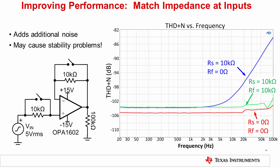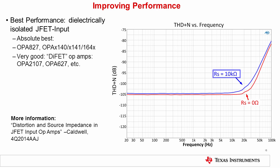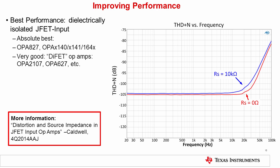However, the additional noise of the 10 kilohm resistor causes the green curve to be shifted by about 1 dB. To minimize noise, part count, or for stability reasons, we may not want to include the matching feedback resistor. Also, in many cases the source impedance isn't precisely known or may vary, making it impractical to match. In these cases, the best way to improve performance is to use a modern JFET input op amp from TI on a dielectrically isolated process, or to use a Burr-Brown DIFET input op amp. The plot shown here is an OPA1641 with zero ohm source impedance in red and a 10 kilohm source impedance in blue. These op amps have an extremely stable input impedance, so the addition of source impedance does not drastically affect the distortion. If you would like to know more, the AAJ paper 'Distortion and Source Impedance' by John Caldwell is a great resource.